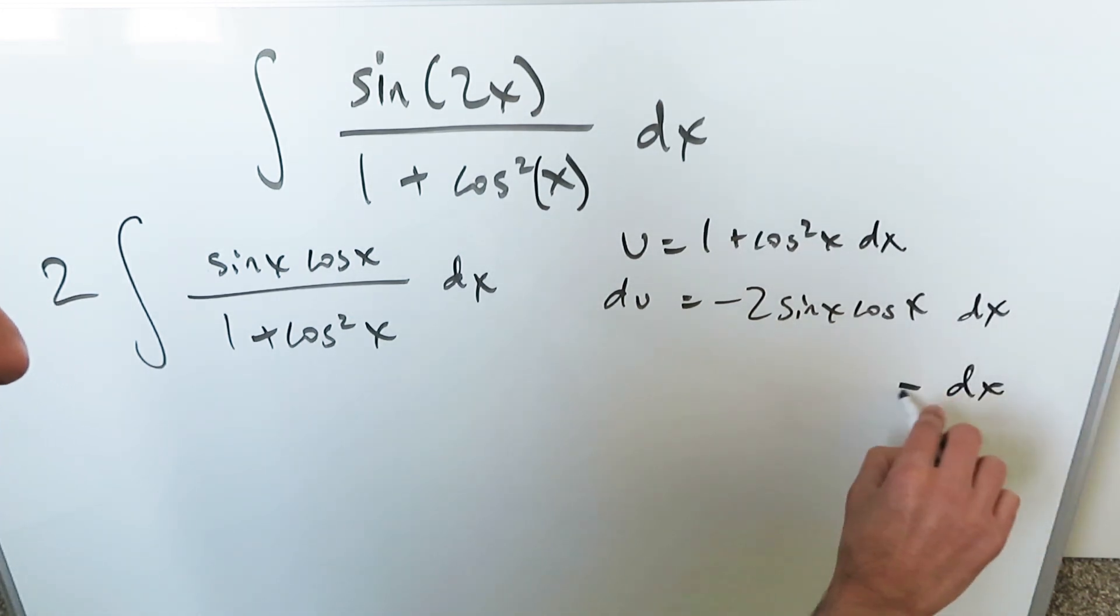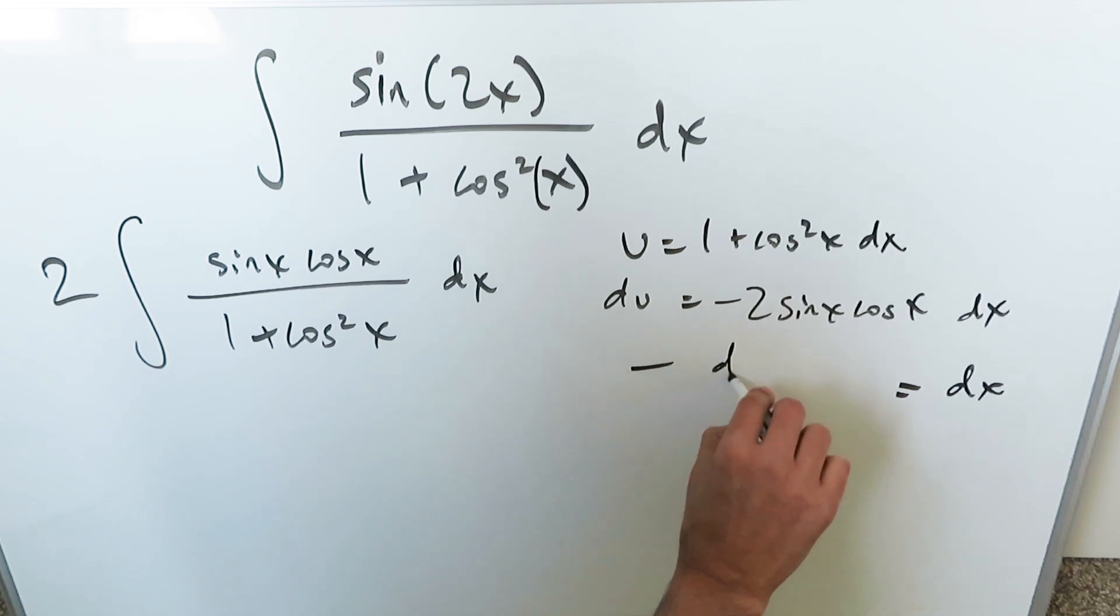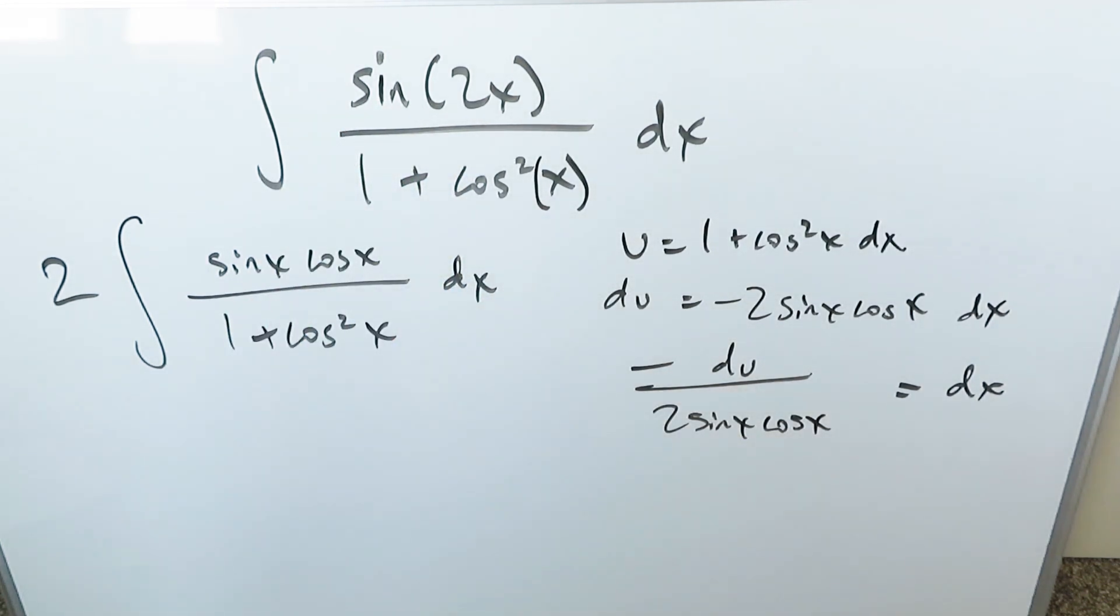When you push it onto the other side, dx is equal to minus du over 2 sine x cosine x. You could rewrite this as sine 2x and you don't even have to open that up. It would cancel out entirely but I've opened it up.